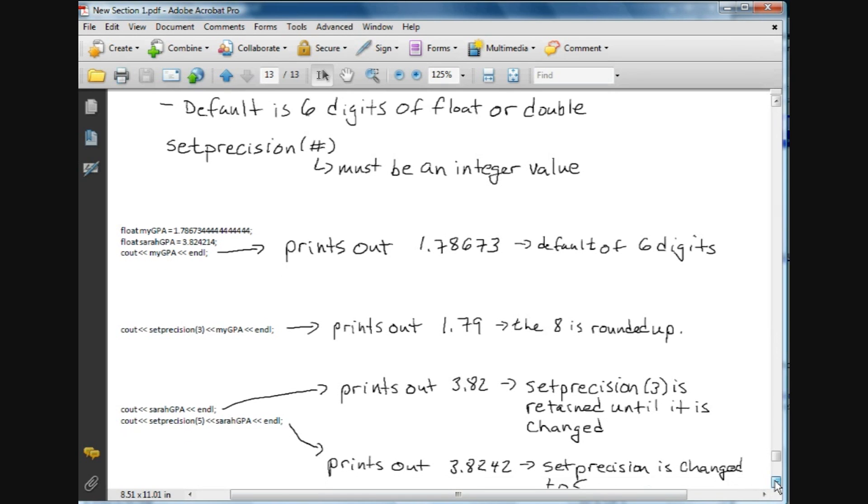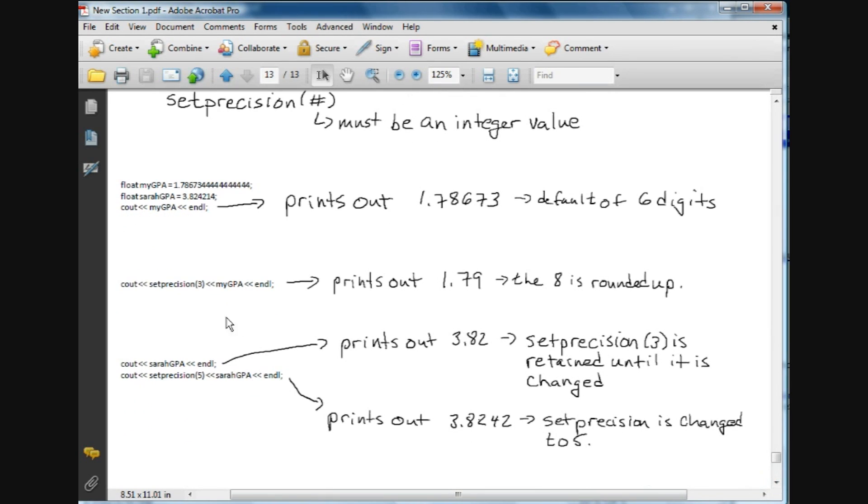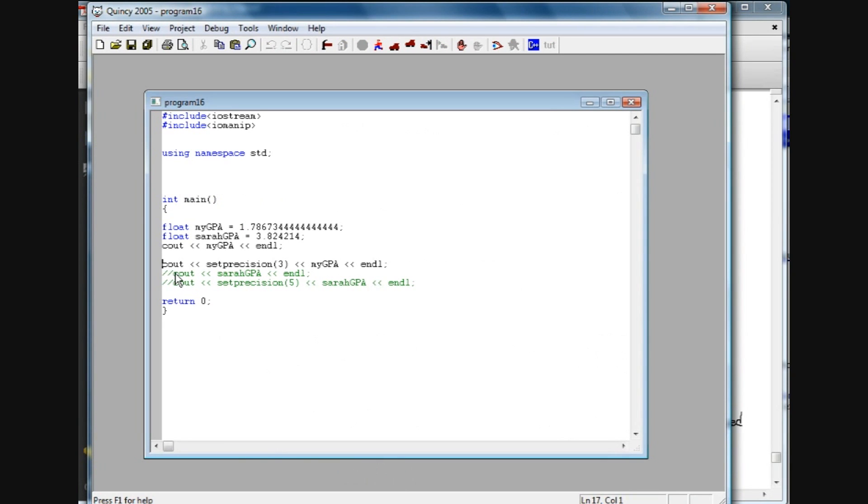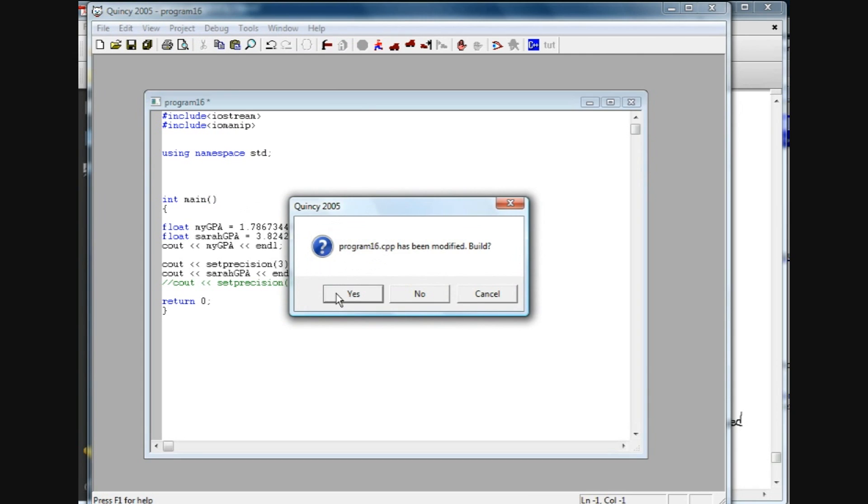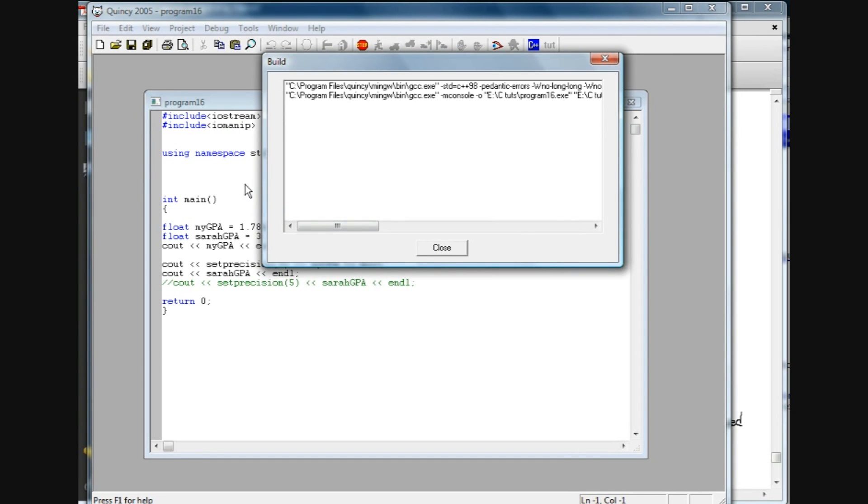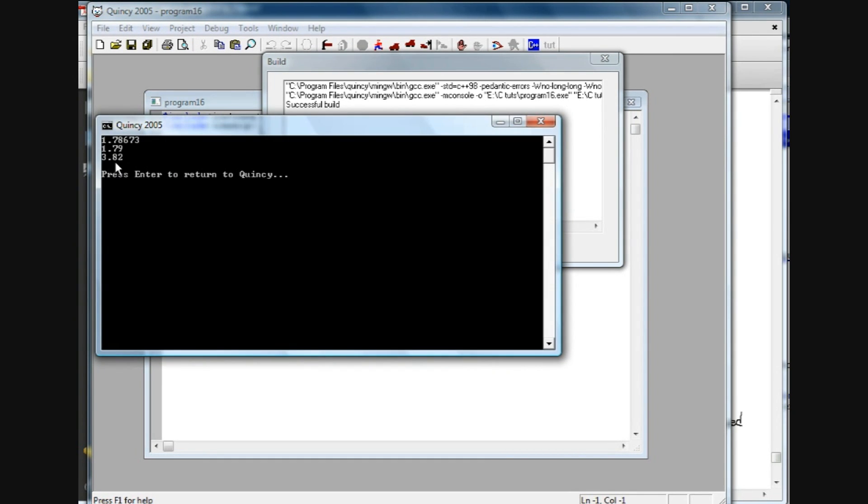So now the thing about that is once we set the setprecision, it carries on throughout until we change it. So what I've done in the next line is I've C out of the float variable sarahGPA, and even though I don't have a setprecision operator in here, it's going to use this previous one that we defined here. So it's going to print out 3.82 from her GPA. So I'm going to go ahead and run this with the sarahGPA with the setprecision in the previous line, not in this line, and you're going to see that we get a three-digit output. And there we have it: 3.82.